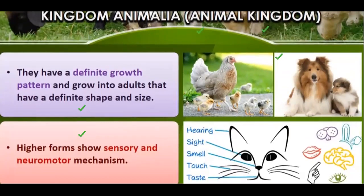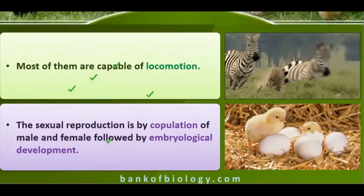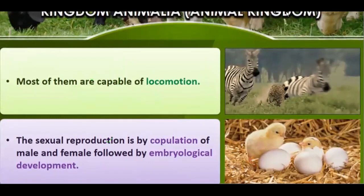Plants have indefinite growth, but animals have a definite growth pattern — each animal has its own shape and size. Higher organisms have senses and respond with the help of neuromuscular mechanisms. Most animals are capable of locomotion. Sexual reproduction is by copulation, followed by embryological development.